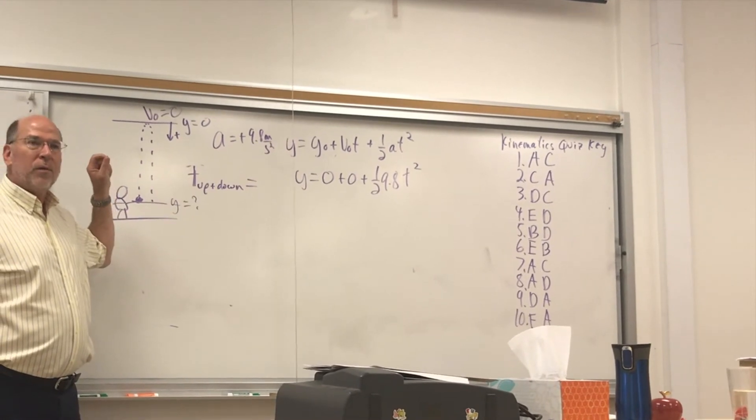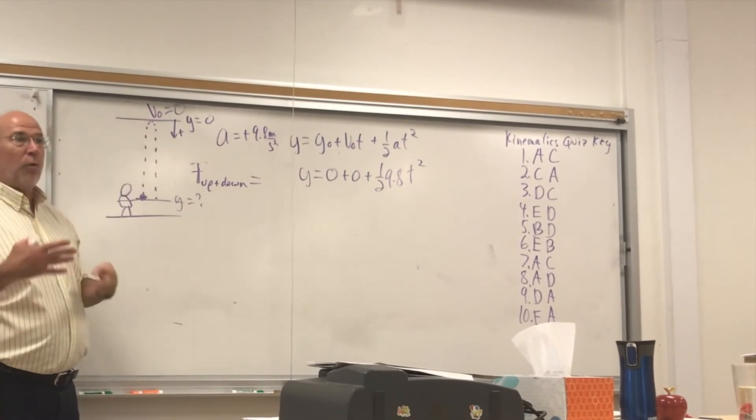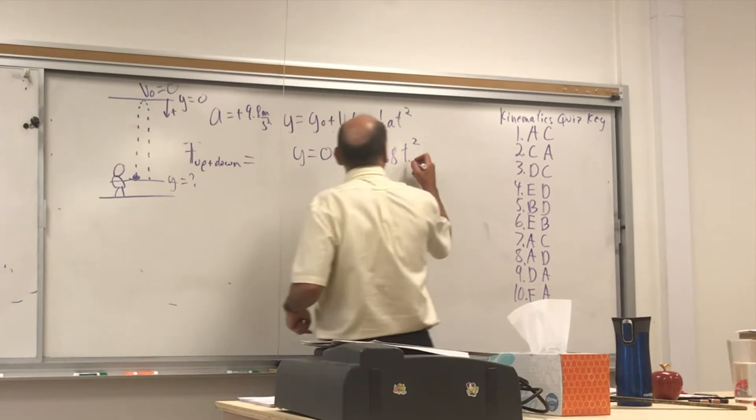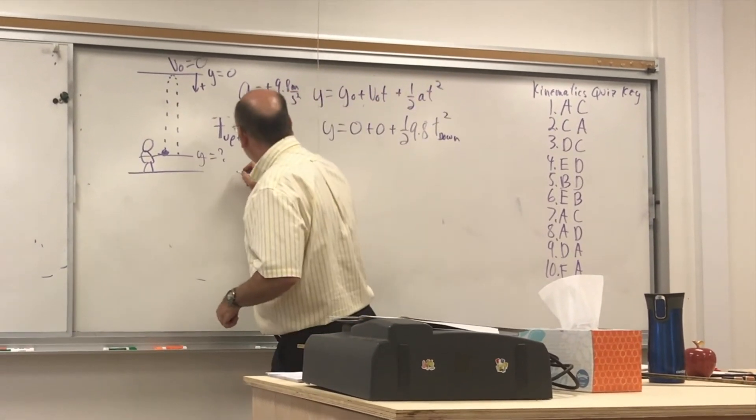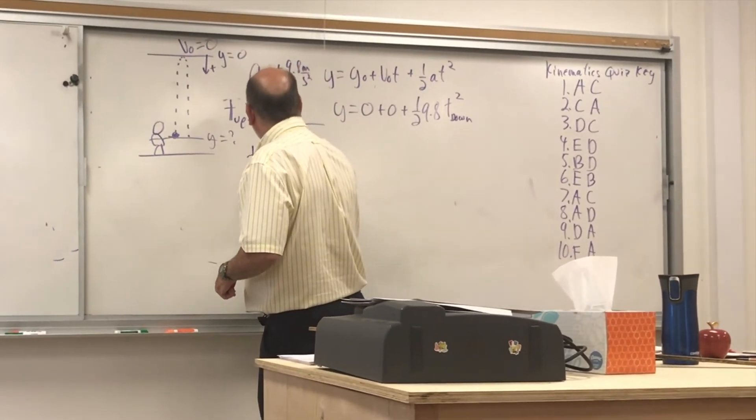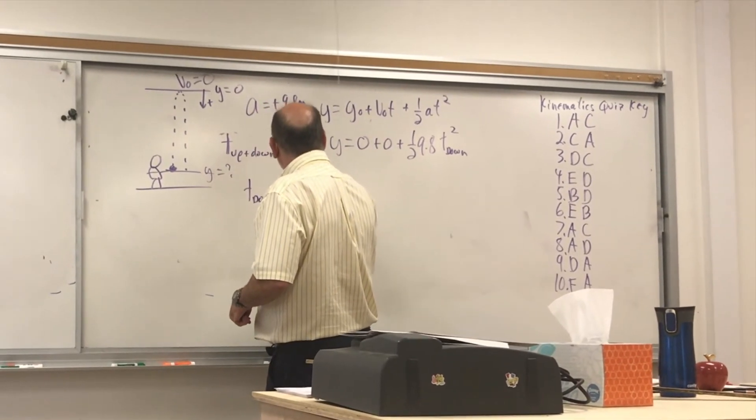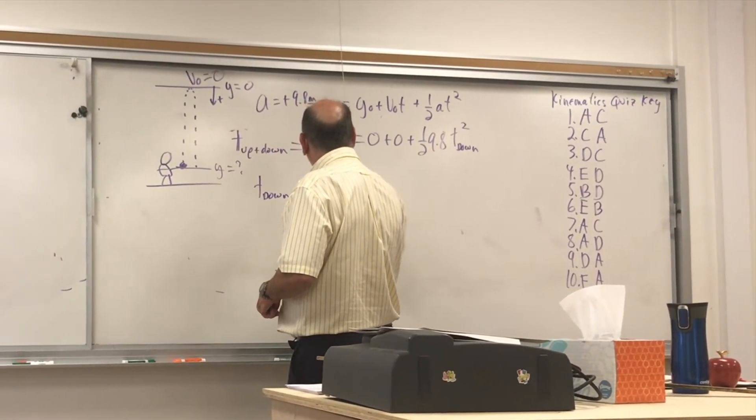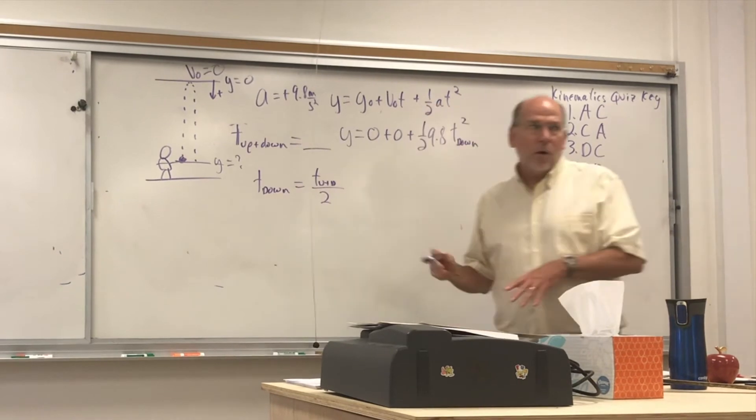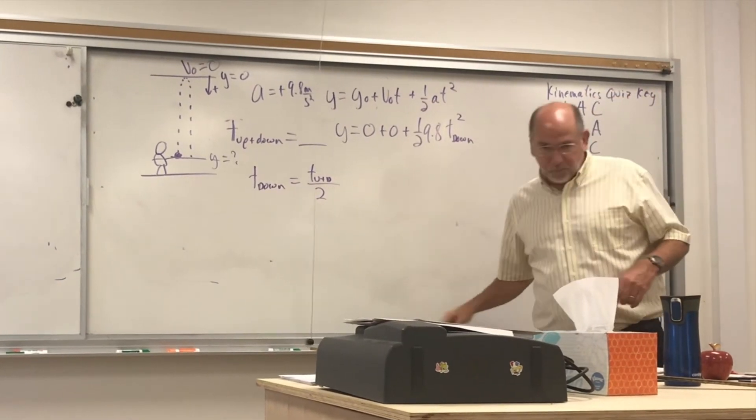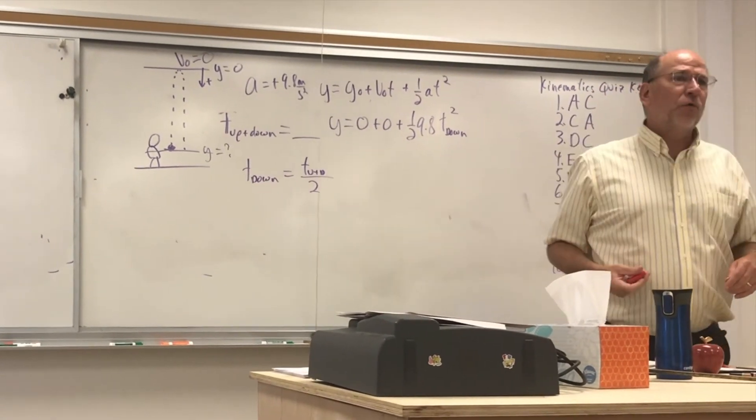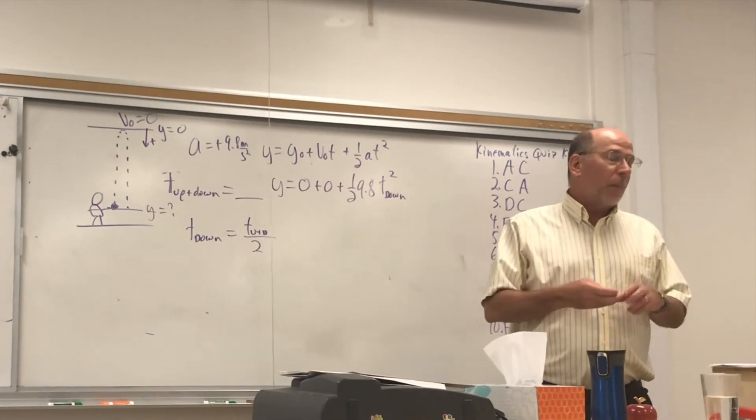What would I use? Half of that. So we're exploiting the symmetry. So this would be just the time down. And so the time down is the time up plus down over 2. So maybe you make that mistake. But I think if you're thinking of doing it that way, you're going to remember to cut it in two.